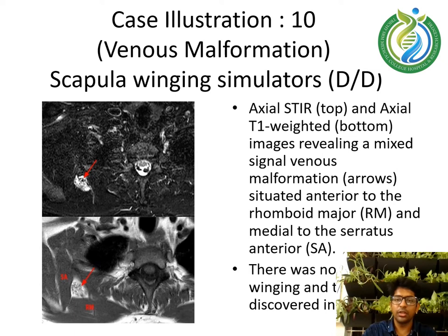Case illustration 10 — Venous Malformation. Axial STIR at the top and axial T1-weighted images at the bottom reveal a mixed signal venous malformation situated anterior to the rhomboid major and medial to the serratus anterior. There was no scapular winging; this was discovered incidentally.